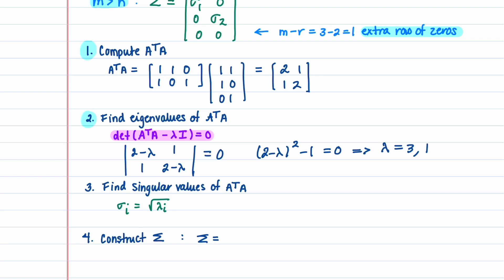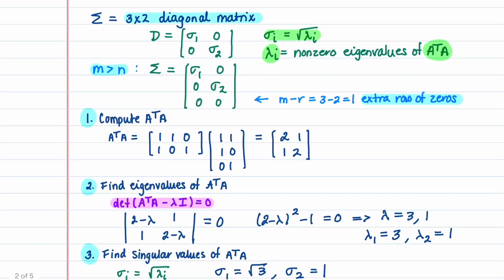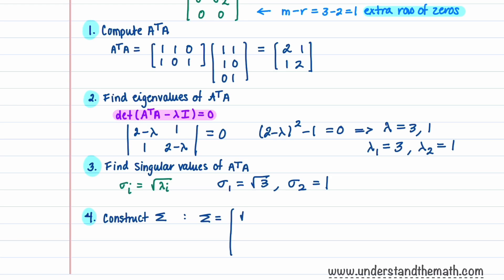We assign lambda 1 = 3 and lambda 2 = 1 since the largest eigenvalue should come first. This gives us sigma 1 = square root of 3 and sigma 2 = 1. Constructing Sigma, we have root 3, 0, 0, 1 along the diagonal, with the extra row of zeros below.